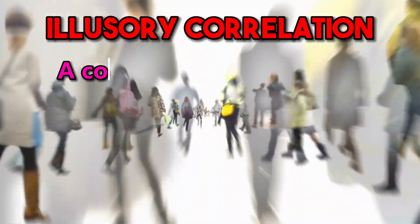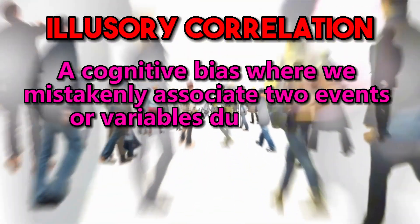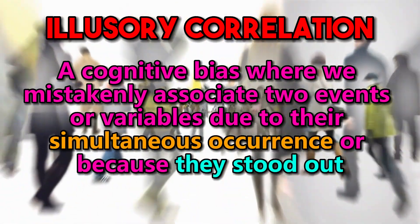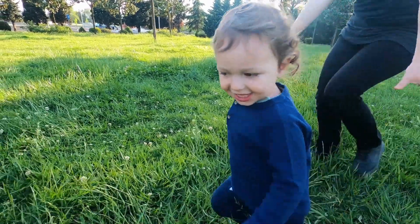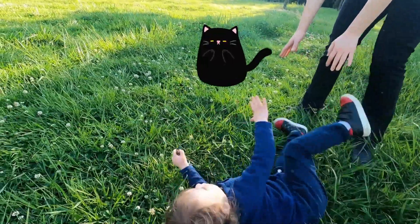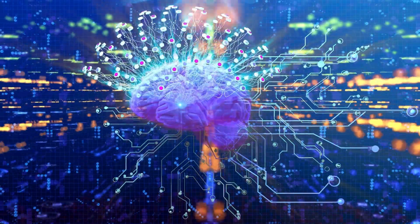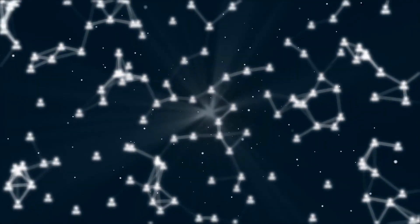Illusory correlation is a cognitive bias where we mistakenly associate two events or variables due to their simultaneous occurrence or because they stood out. For instance, if we see a black cat and then trip over a stone, we might associate black cats with bad luck, even though the two events are unrelated. This happens because our brains are wired to find patterns and make sense of the world around us. But sometimes this leads us to see connections that aren't there, creating these illusory correlations.